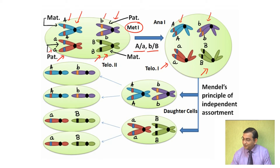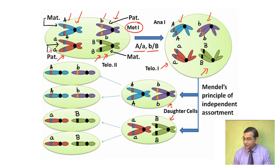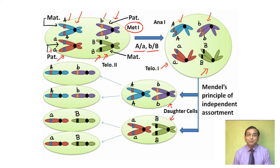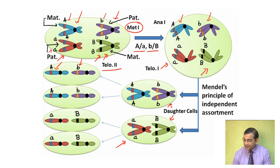Eventually, daughter cells are formed carrying these segregated chromosomes. Each daughter cell carries capital A and small b alleles, while another daughter cell carries small a and capital B alleles. Ultimately at telophase two, four gametes are formed — half carrying capital A and small b alleles, and half carrying small a and capital B alleles.